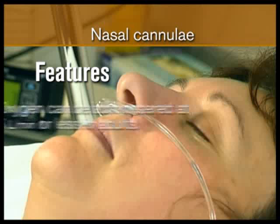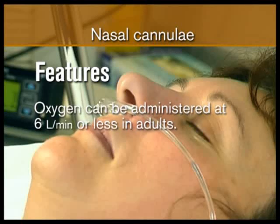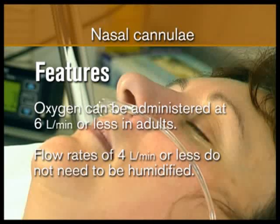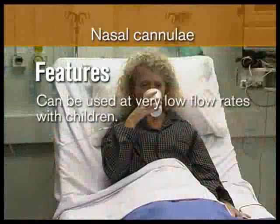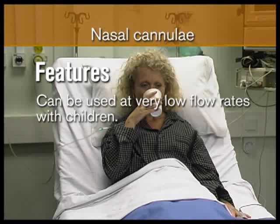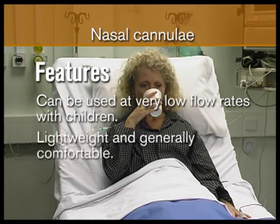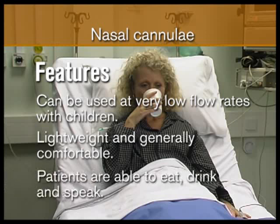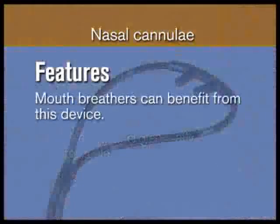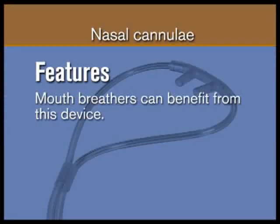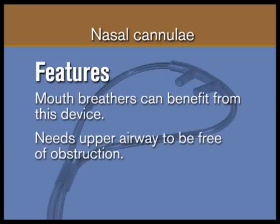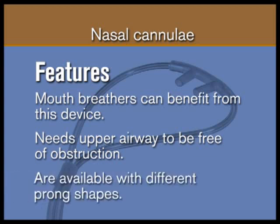Oxygen can be administered at 6 litres per minute or less. Flow rates of 4 litres per minute or less do not need to be humidified. Can be used at very low flow rates with children. Lightweight and generally comfortable. Patients are able to eat, drink and speak. Mouth breathers can benefit from this device. Needs upper airway to be free of obstruction. Available with different prong shapes.